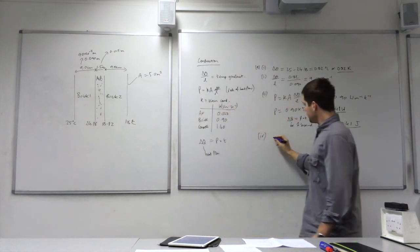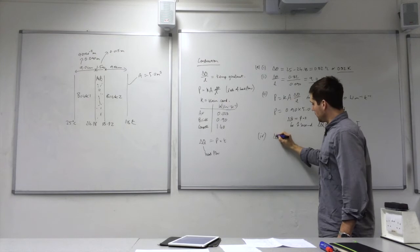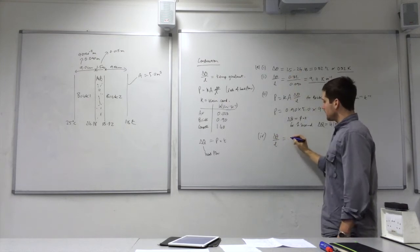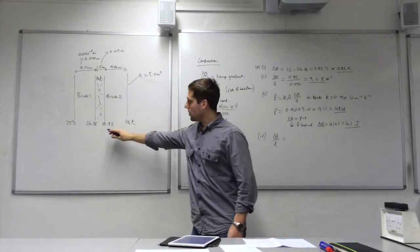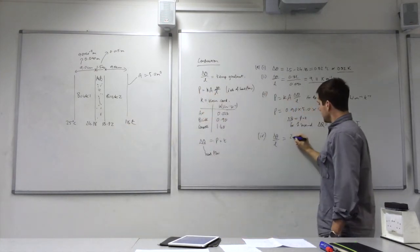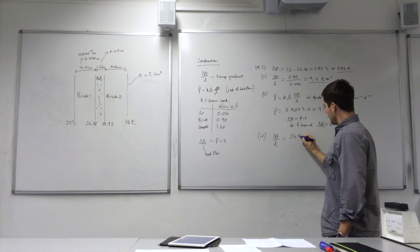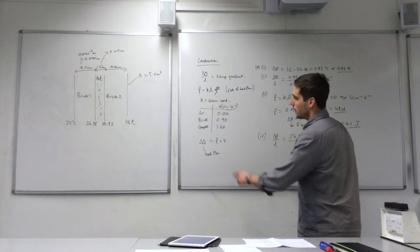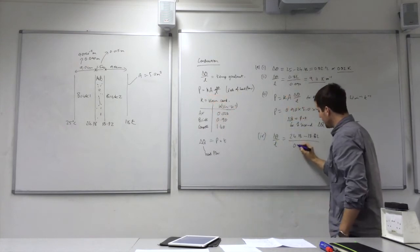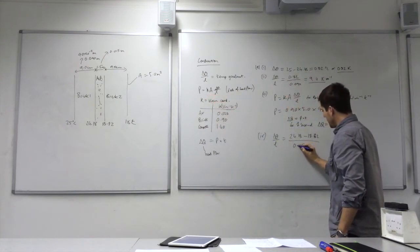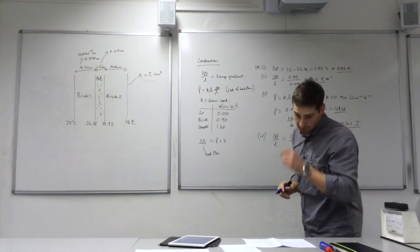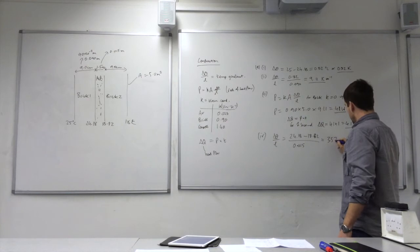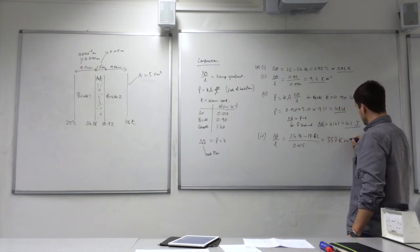This is part 4. I'll work out the temperature gradient directly, rather than doing delta T first. So this is 24.18 minus 18.82, over the thickness, which is 0.015. Temperature gradient is 357 Kelvins per meter.